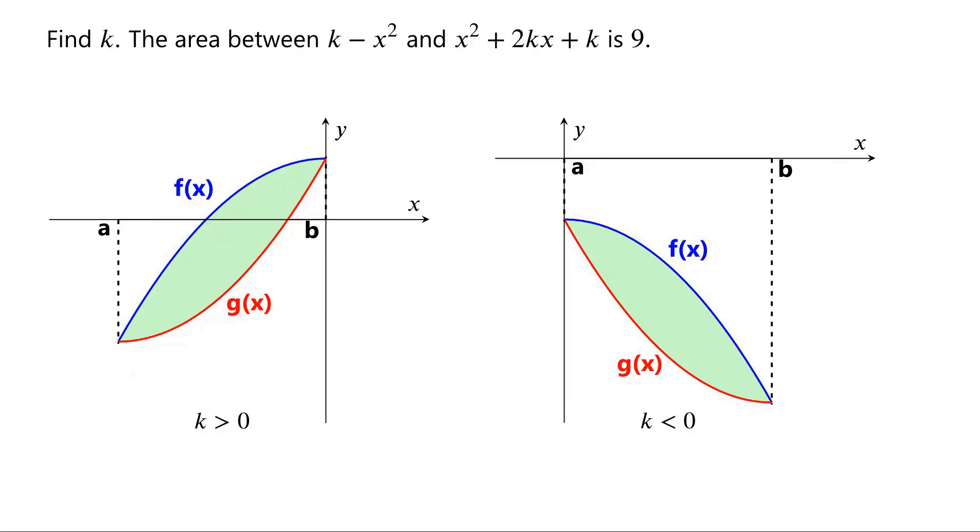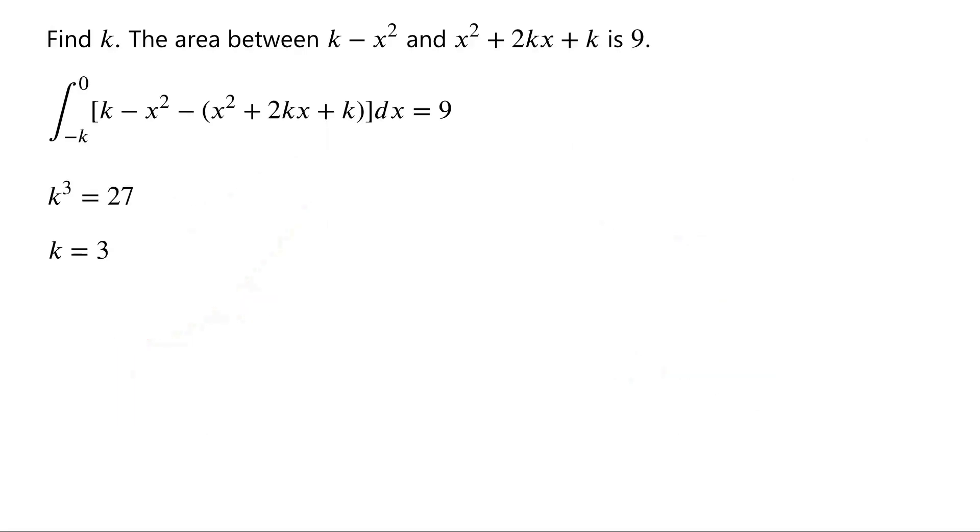So, we missed the case for a negative k, as shown in the right panel. Of course, we can obtain the other solution by swapping the upper and lower bounds. To avoid redoing the entire process, we can instead take the absolute value of the integral. Therefore, we have modulus of k cubed equals 27.